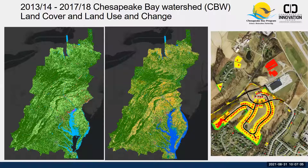On the left is our 2017–18 land cover product; in the middle is the land use product; and on the right is an example of what the change products look like. We are creating a change product for both land cover and land use. These have different classes. In the change product, where there is no change on the landscape, there is no data — only where change exists.